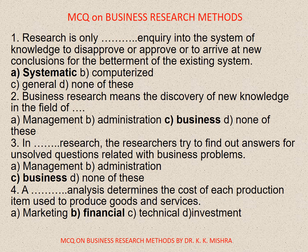Question number one. Research is only dash inquiry into the system of knowledge to disapprove or approve, or to arrive at new conclusions for the betterment of the existing system. Options are: A. Systematic, B. Computerized, C. General, D. None of these. Correct option is A. Systematic.